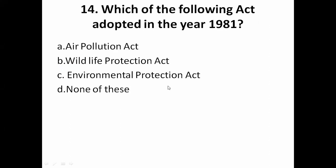Which of the following acts was adopted in the year 1981? The options are: A — Air Pollution Act, B — Wildlife Protection Act, C — Environmental Protection Act, D — None of these. The correct answer is A — the Air Pollution Act, 1981.